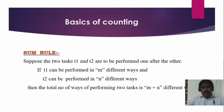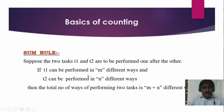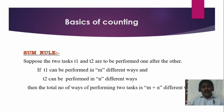Number one: Sum Rule. Suppose two tasks T1 and T2 are to be performed. T1 is performed in m different ways and T2 is performed in n different ways. By the sum rule, the total number of ways of performing the two tasks is m plus n different ways. Sum means plus, so m plus n.